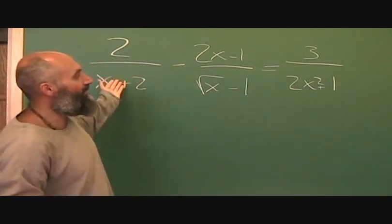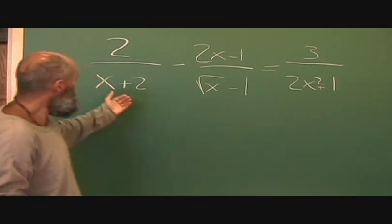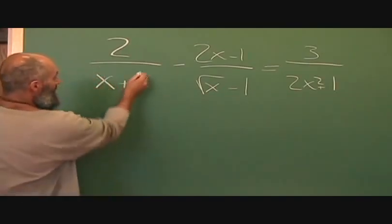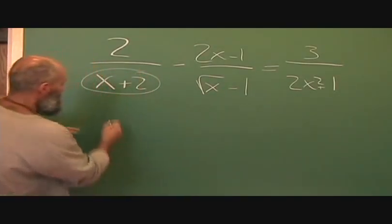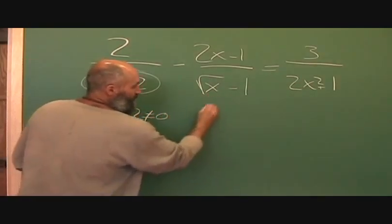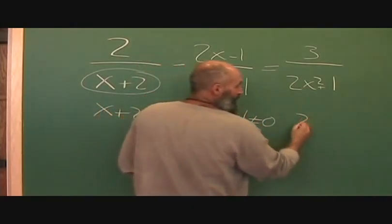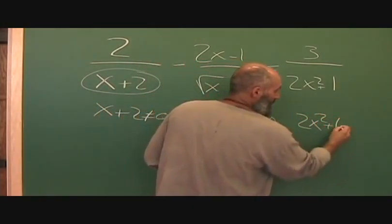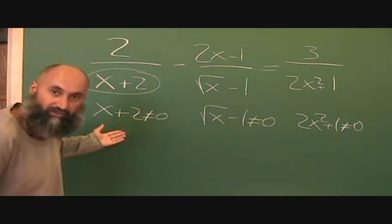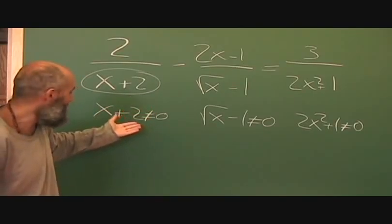Let's assume they ask you what the restrictions for this equation would be. All you do is take the denominator and say that can't equal zero. So you go: x plus 2 can't equal zero, square root of x minus 1 can't equal zero, 2x squared plus 1 can't equal zero. Those are your restrictions, but you're going to have to solve these not-equal-to equations.